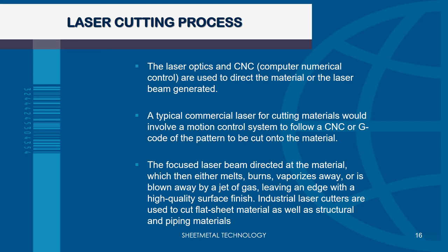Laser optics and computer numerical control (CNC) are used to direct the material or laser beam. A typical commercial laser for cutting uses a motion control system to follow a CNC or G-code pattern to be cut onto the material. The focused laser beam is directed at the material, which then either melts, burns, vaporizes, or is blown away by a jet of gas, leaving an edge with a high-quality surface finish. Industrial laser cutters are used to cut flat sheet material as well as structural piping material.